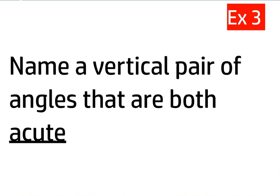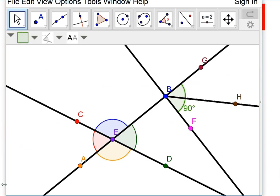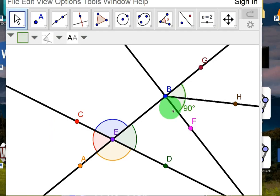So, next. It says, name a vertical pair of angles that are both acute. So, they have to be vertical like before, but they have to be smaller than 90. Going back to our app. Vertical angles are both acute. Going back to our app. That would be these two angles. They're vertical, but they're less than 90. So, AEC and DEB.